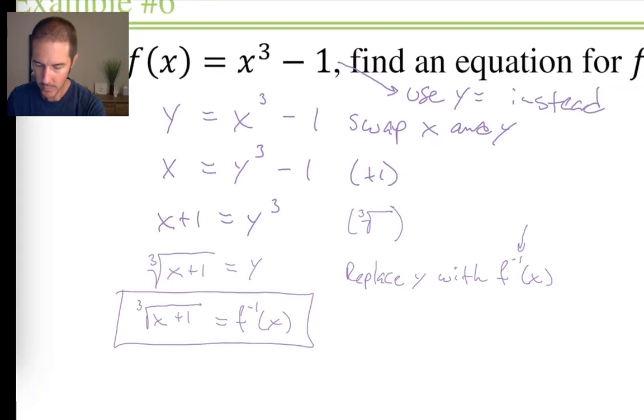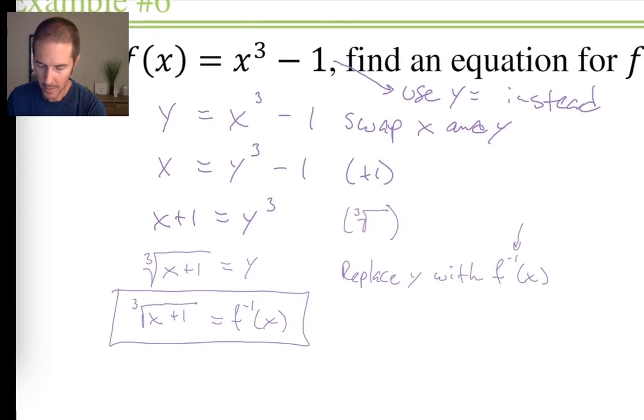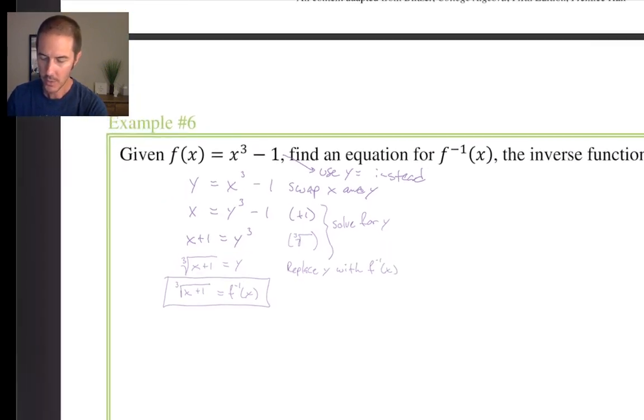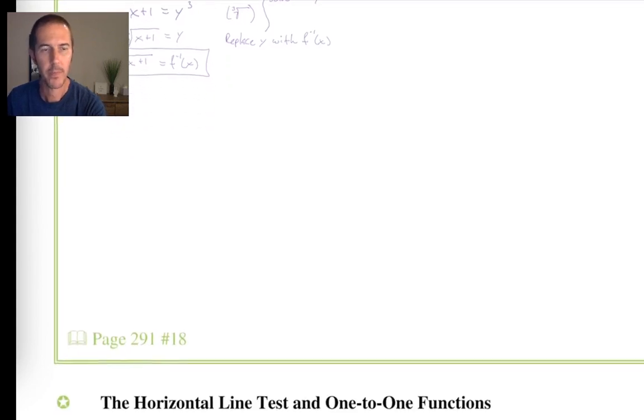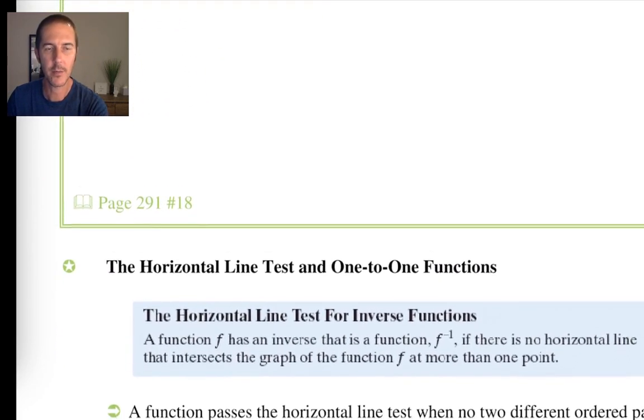And we used y equals instead. And then we swapped x and y. And then really, it was only these two steps that we needed to do in order to solve for y. And if you don't want to write solve for y, you want to write get y all alone, write that instead. If you want to write isolate y, write that instead. Whatever resonates best with you, especially for later when you're going through and reviewing your notes. But that's the process of finding an inverse function.